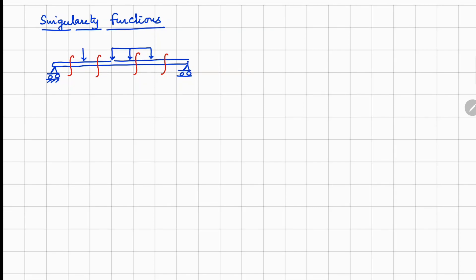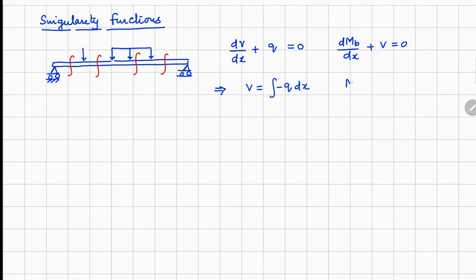From the equilibrium perspective we have two equations: dV/dx plus q equals zero, and dM/dx plus V equals zero. From this, if we integrate the first equation we can get V by integrating q, and once we have V we can get M by integrating V one more time.